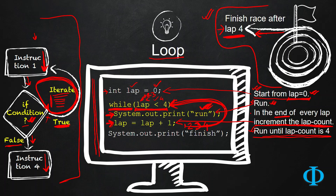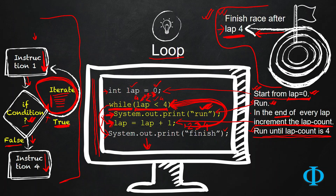After incrementing to 4, it goes back to the while loop and checks the condition. But this time, 4 less than 4 does not hold — so the condition is false. Once the lap variable hits the value of 4, the race is finished. The condition evaluates to false, so instead of executing the loop body again, it breaks the loop, comes outside, prints finish, and continues executing any remaining lines of the program. That is the concept of loop, and we will clarify it in the next video through a simple demo Java program.